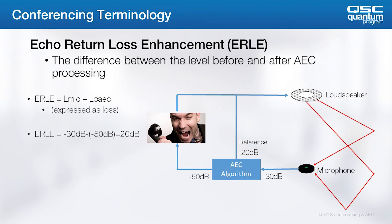The echo return loss enhancement, or ERL-E, represents the relative success of the algorithm in canceling the echo. Mathematically, it's the difference between the level of the signal at the input of the block and the resultant level. In this case, we see a level of negative 30 decibels into the algorithm, with a level of negative 50 decibels post-processing. The computed ERL-E would then be 20 decibels.